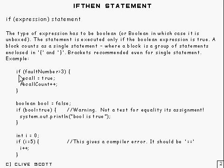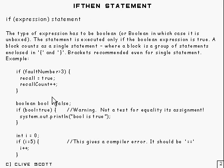Here are some examples. We've got here: if fork number is greater than 3, then recall equals true and recall count is incremented. It's pretty simple.